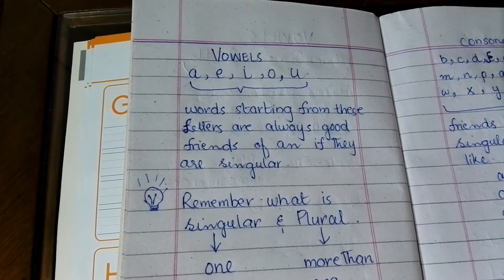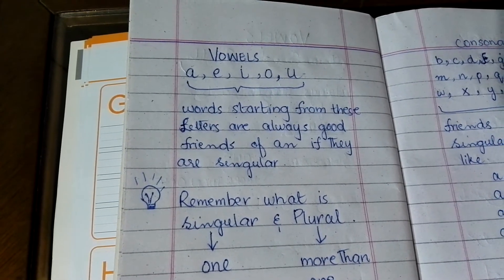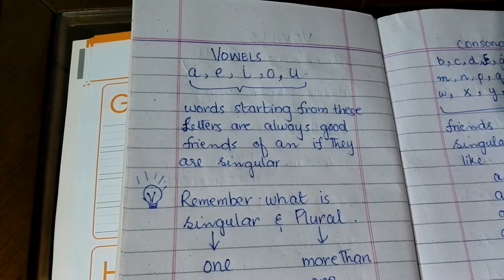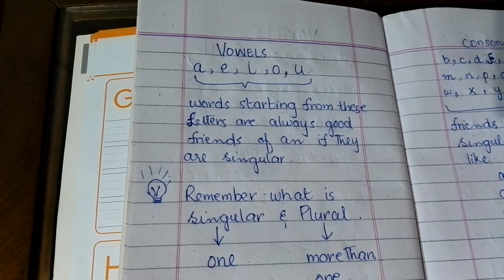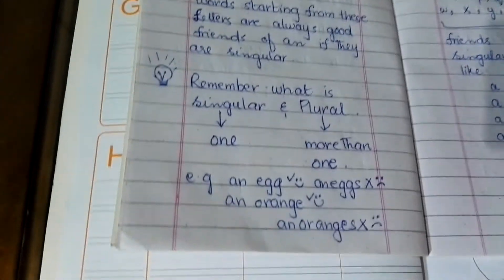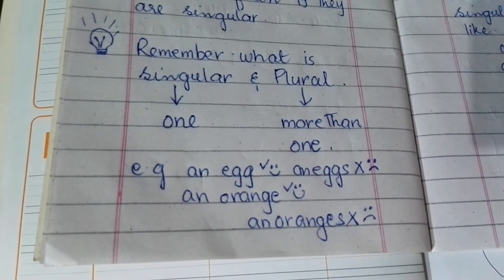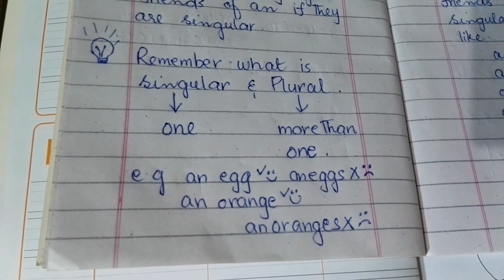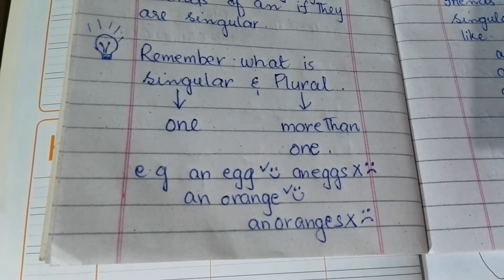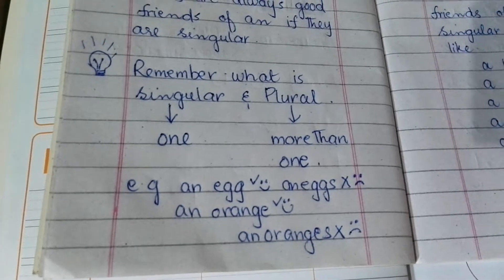Agar zyada eggs honge yaani plural ho, to phir hum 'an' nahi lagaayenge, kyunki agar wo singular hota hai to wo 'an' ka friend hota hai, otherwise nahi. Jaise: 'an egg' likhenge to sahi hai, 'an eggs' likhenge to wrong ho jayega. 'An orange' is correct, 'an oranges' is wrong.